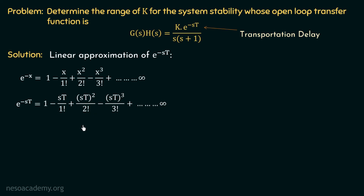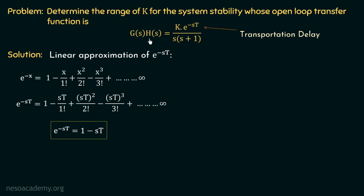The practical delay in the system is in the order of microseconds or nanoseconds, and that's why these higher-order terms are negligibly small. So we can neglect them in the expansion of e power minus st. If we consider only the first two terms in this expansion, the linear approximation of e power minus st will be 1 minus st. We now substitute 1 minus st in place of e power minus st in the open loop transfer function, giving the modified open loop transfer function as GSH equal to k multiplied with 1 minus st over s multiplied with s plus 1.